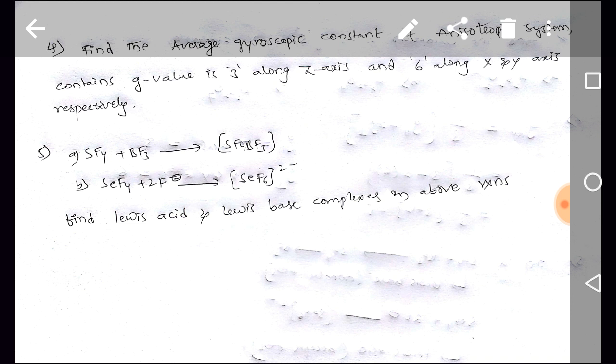Fifth one: A sulfur tetrafluoride reacting with boron trifluoride and we have the product. And B selenium tetrafluoride reacting with 2F minus and we have the product. So find Lewis acid and Lewis base complexes in the above reaction.